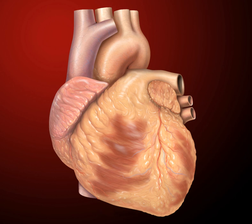The heart is a muscular organ in most animals, which pumps blood through the blood vessels of the circulatory system. Blood provides the body with oxygen and nutrients, as well as assists in the removal of metabolic wastes. In humans, the heart is located between the lungs, in the middle compartment of the chest.